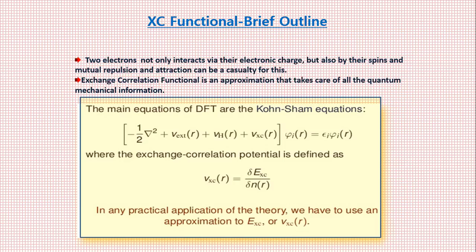Okay, so another thing you have to know is what is exchange correlation functional. Now see, two electrons not only interact by the electronic charge but also by their spins. So now see, Pauli exclusion says that two electrons cannot stay in the same energy state. So if the two electrons are staying in the same energy state, they have to stay with opposite spin.